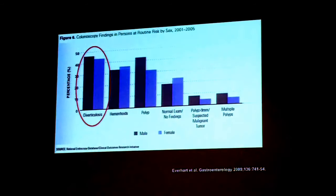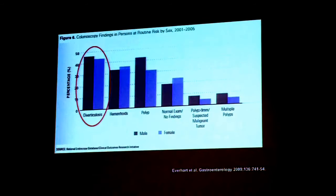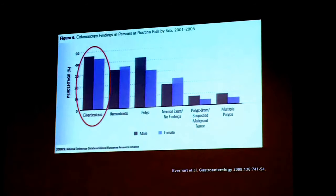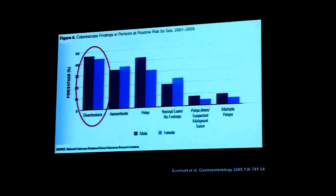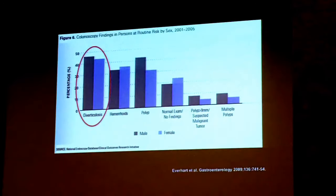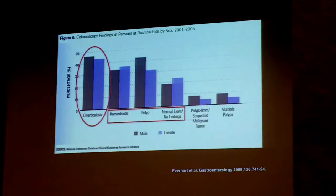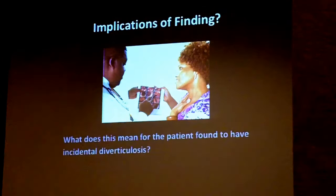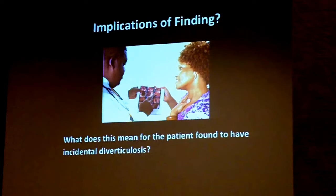That's kind of interesting unto itself, that the fourth most common situation is a normal exam. So you might almost think, well, diverticulosis is part of the human experience — like, by being a human, we're going to develop diverticulosis, particularly in the Western world. So when does it become a disease? When does it explain somebody's irritable bowel syndrome symptoms? When could it go on to develop diverticulitis? These are all questions that patients have, and what does this mean for the patient who's found to have incidental diverticulosis?